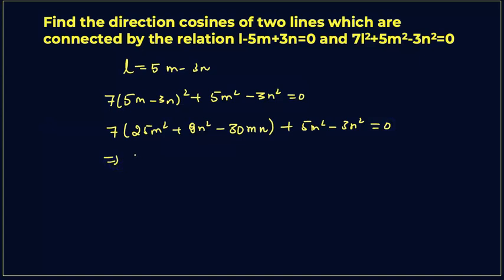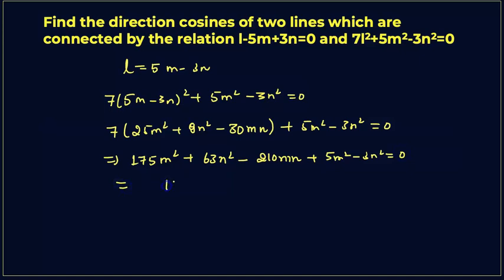Expanding further: 7 times 25m squared gives 175m squared, and 7 times 9n squared gives 63n squared. Combining like terms: 175m squared plus 5m squared equals 180m squared, and 63n squared minus 3n squared equals 60n squared. So we get 180m squared minus 42mn plus 60n squared equals 0.